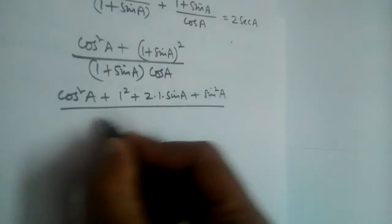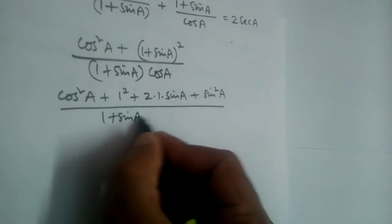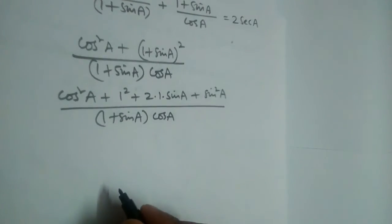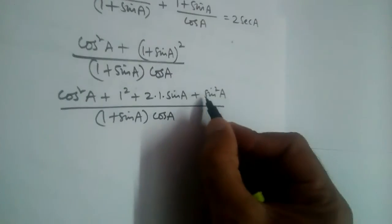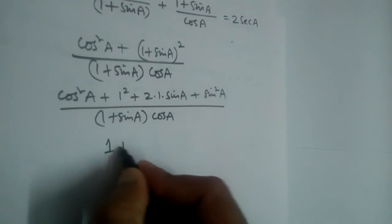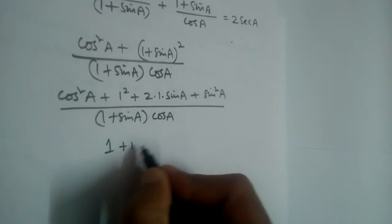The whole thing divided by 1 plus sine A multiplied by cos A. Okay, so this cos square A and sine square A will become 1, right? So it is 1, and 1 square is 1.